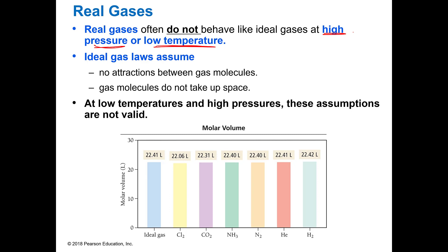At high pressure or low temperatures, real gases do not follow ideal gas laws because ideal gas laws assume there are no attractions between the gas molecules and that they're so small they don't take up any space. At low temperatures and high pressures these are no longer valid. Low temperature means they're moving very slowly, and high pressure means you're going to be pushing them together.